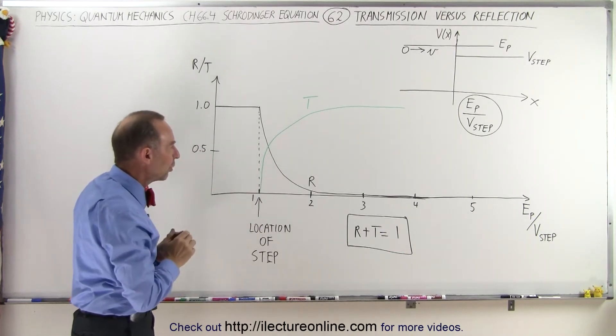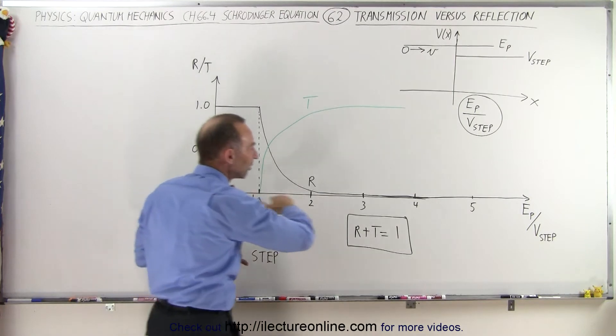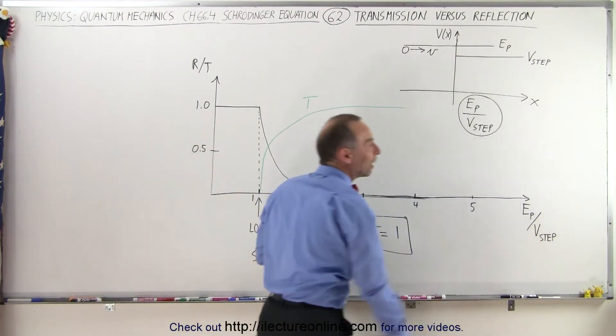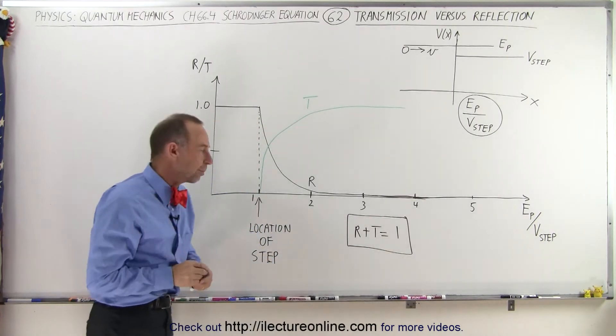And then on the horizontal axis, we have the ratio of the energy of the particle to the ratio of the potential of the step or the barrier.